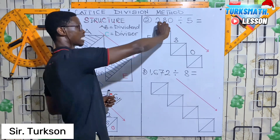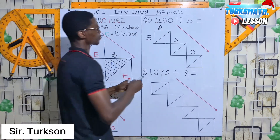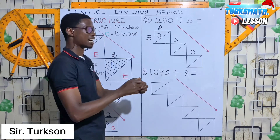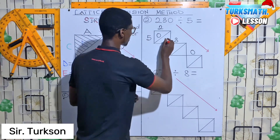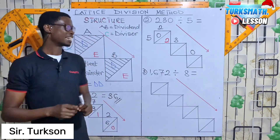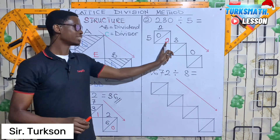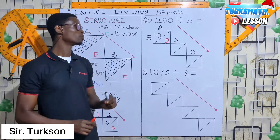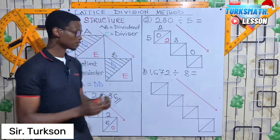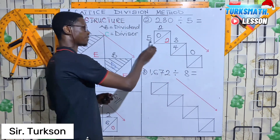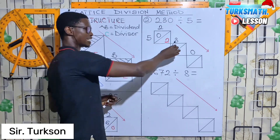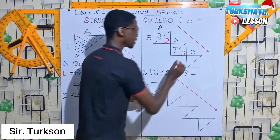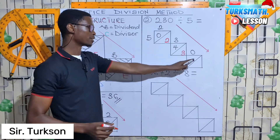How many 5s can we get from 2? Zero — it cannot divide, so we drop the 2 as our remainder. Every remainder becomes tens, so 2 becomes 20. 20 plus 3 gives 23. How many 5s can we get from 23? That is 4, because 5 times 4 equals 20, leaving a remainder of 3. That 3 becomes tens again, so it becomes 30.